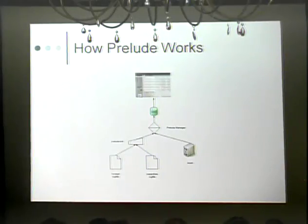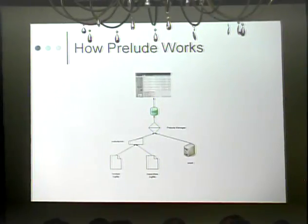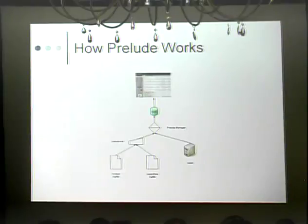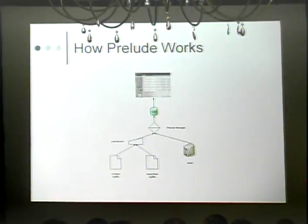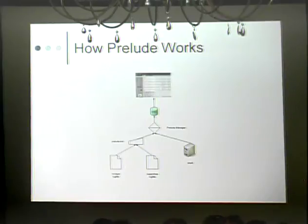How Prelude works: the two files at the bottom are a HoneyD log file and a Nepenthes log file. These get read into something called Prelude LML — the Log Management Layer or something they thought was cute. That, along with a Snort installation, can both be fed into something called a Prelude Manager. It does all the correlation and logs everything into one giant database. From there you can look at the database via the PreWiCA web interface. It's not just HoneyD and Nepenthes — Prelude LML can support many different log formats including Apache and system logs.